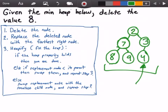Next, if that's not true, we're going to check if the replacement node's value is less than its parent's node value. If it is, then we're going to swap them and repeat step 3.